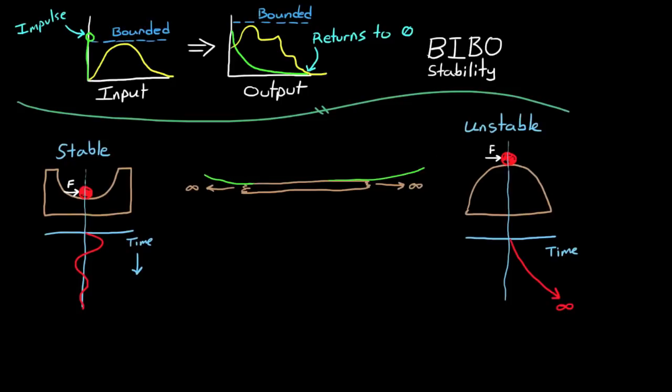We can see that if the table slopes up ever so slightly on each side, then the ball will eventually come back to rest at the starting point after it's been disturbed. This is a stable system.